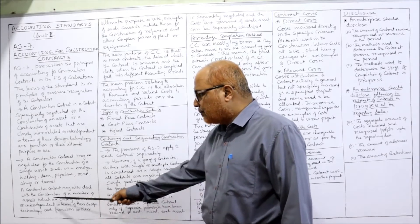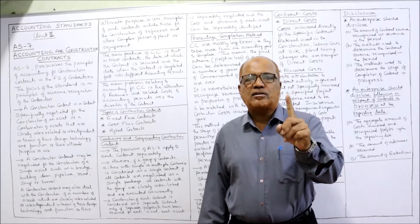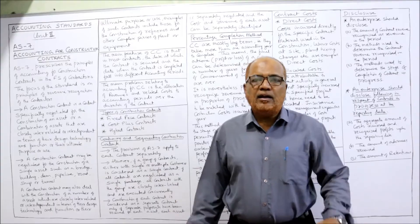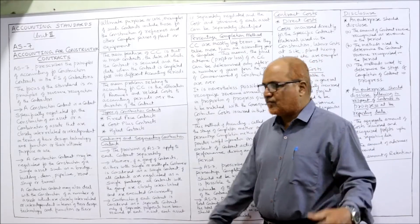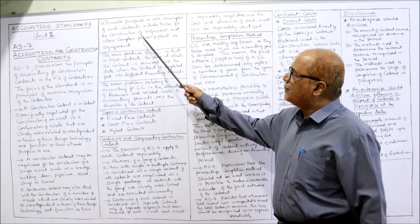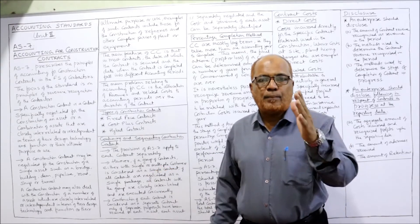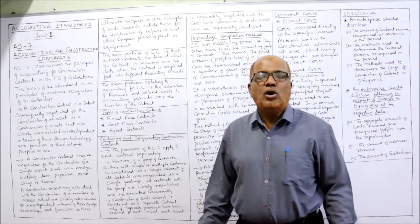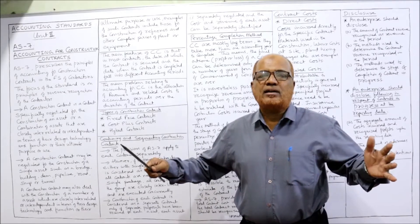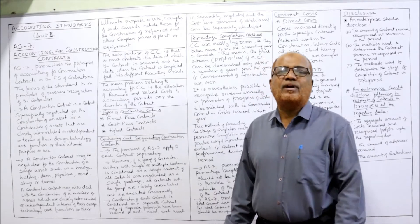A construction contract may also deal with construction of a number of assets that are closely interrelated or interdependent in terms of design, technology, functions, or ultimate purpose. Examples include construction of refineries and other complex pieces of plant and equipment, where a huge contract is split into a number of interrelated and interdependent parts.